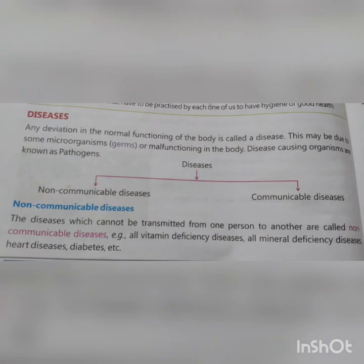Now we discuss disease, means बीमारियां। Any deviation in the normal functioning of the body is called a disease. जब हमारी body की normal functioning में कोई विचलन आ जाता है तो उसे disease कहा जाता है। This may be due to some microorganism or malfunctioning in the body। Disease-causing organisms are known as pathogens — जो disease पैदा करने वाले organisms होते हैं उन्हें pathogens या रोग जनक कहा जाता है।